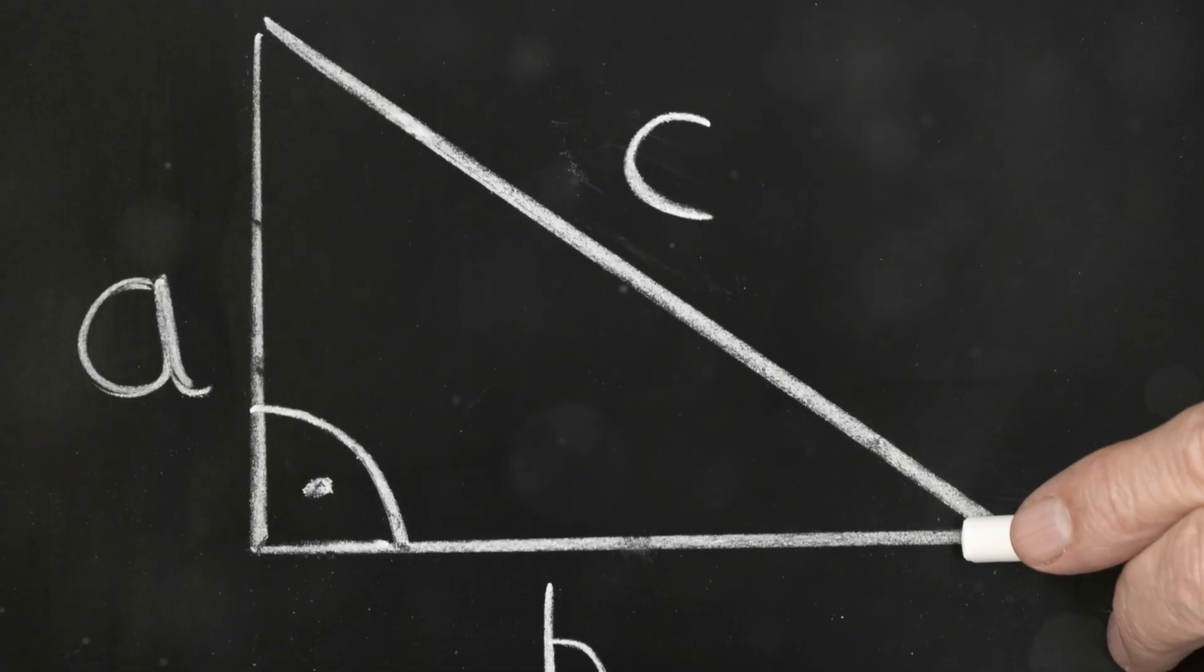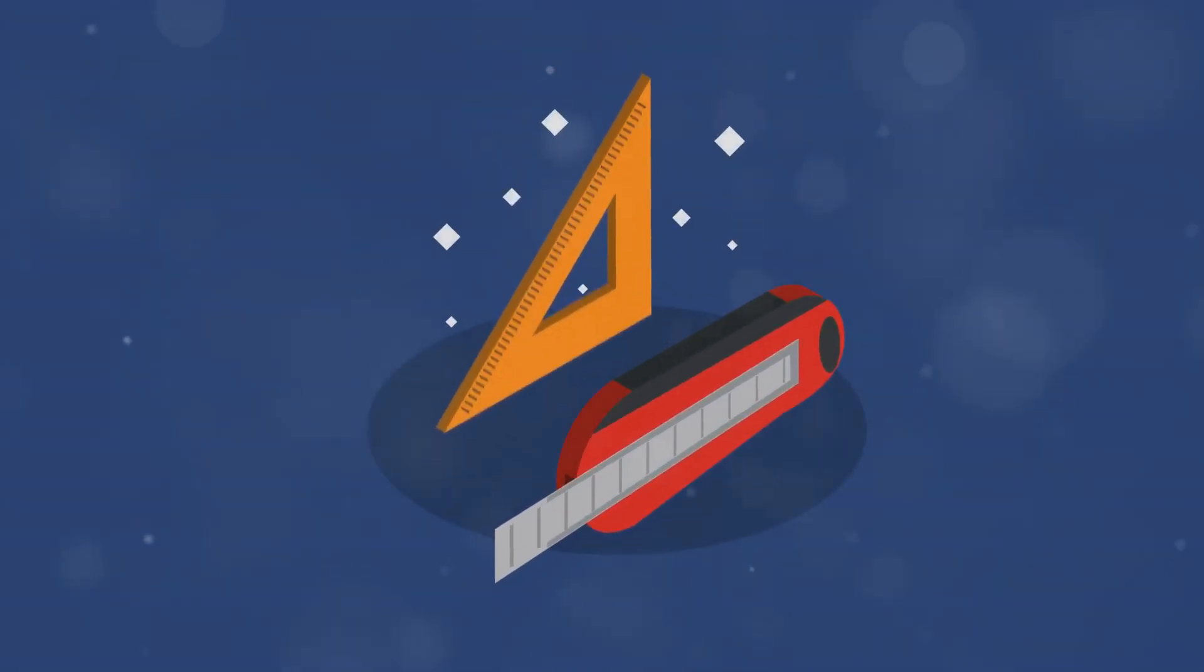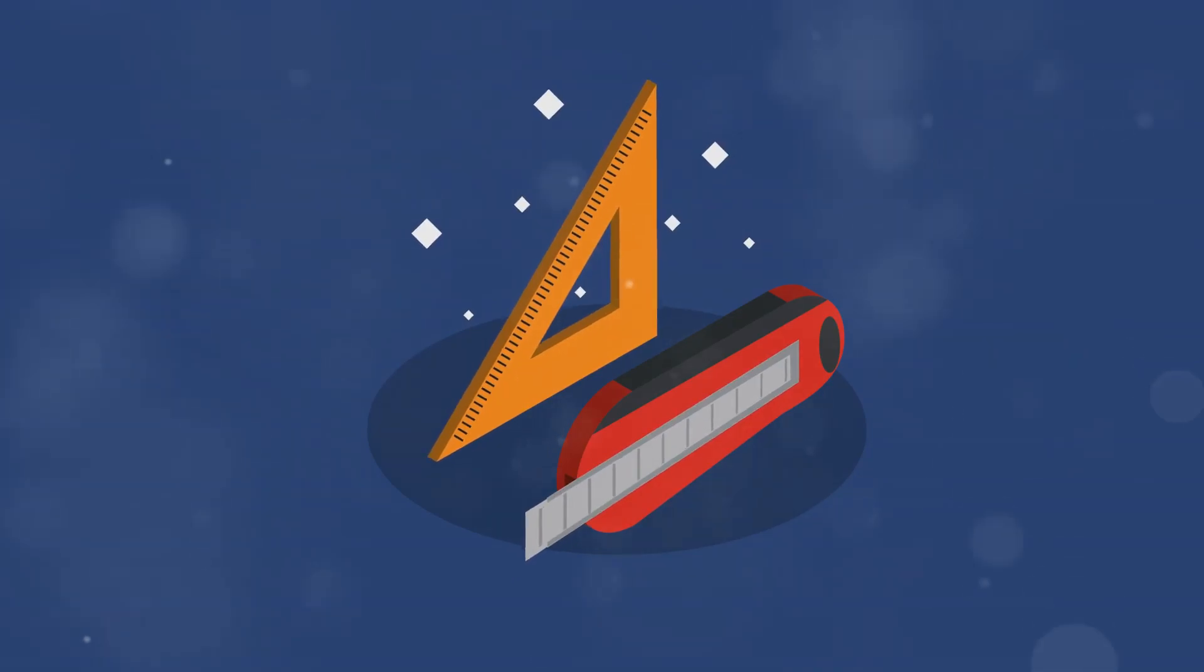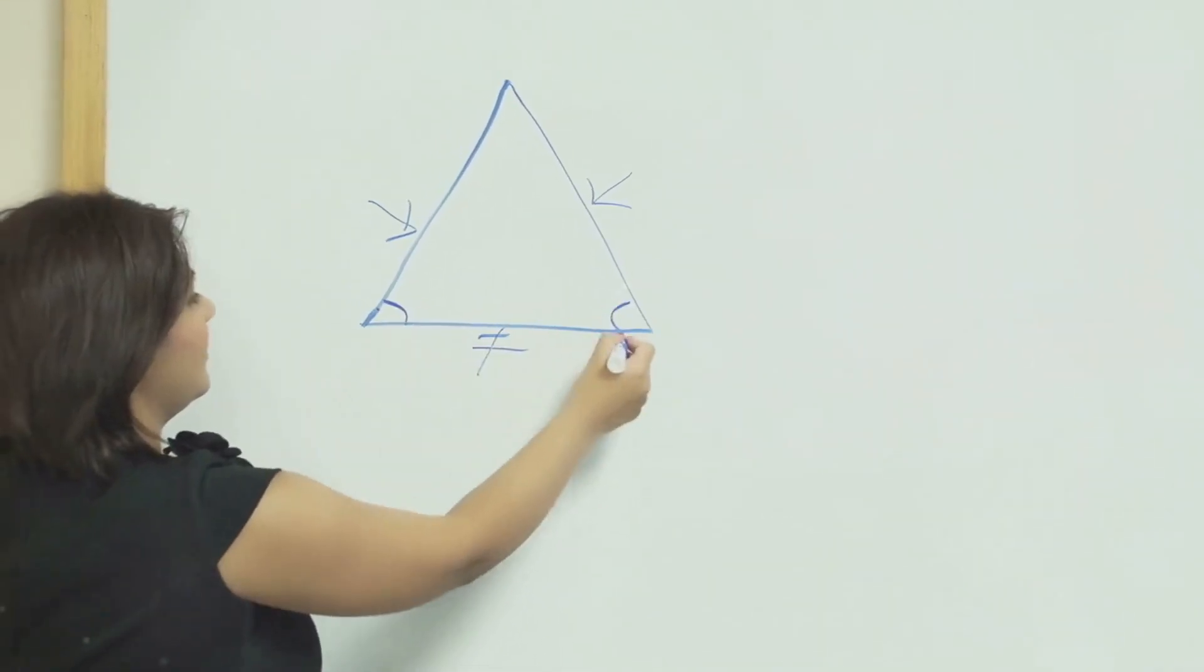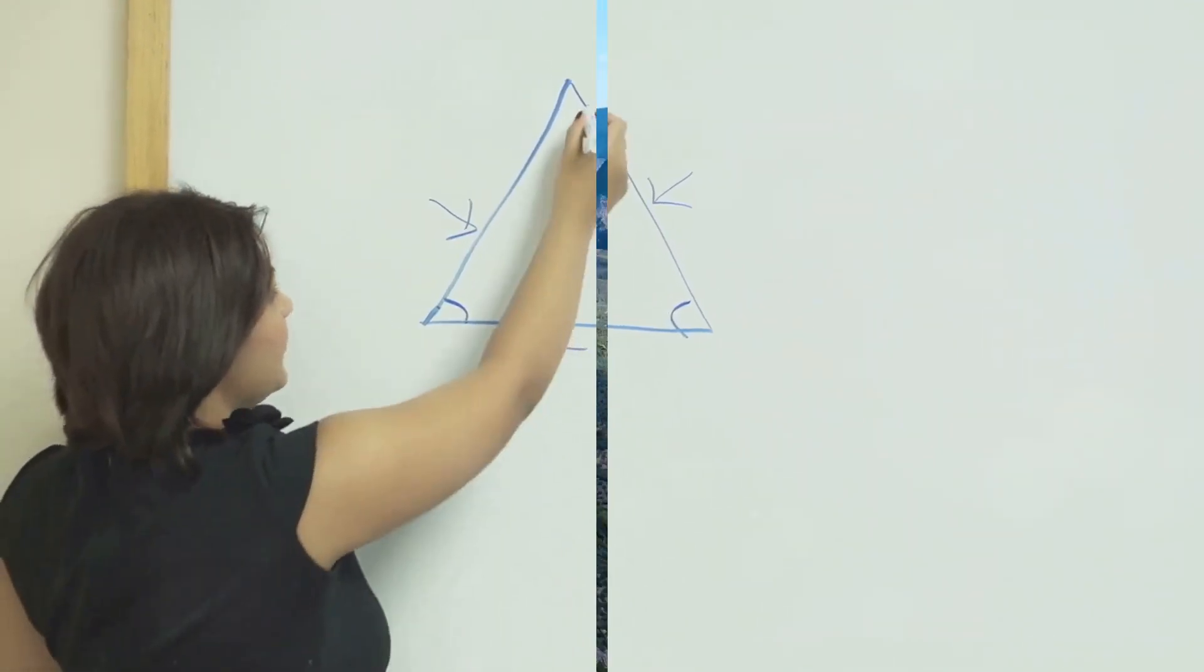This theorem, stating that in a right-angled triangle, the square of the hypotenuse is equal to the sum of the squares of the other two sides, has countless applications in fields such as architecture, engineering and physics.